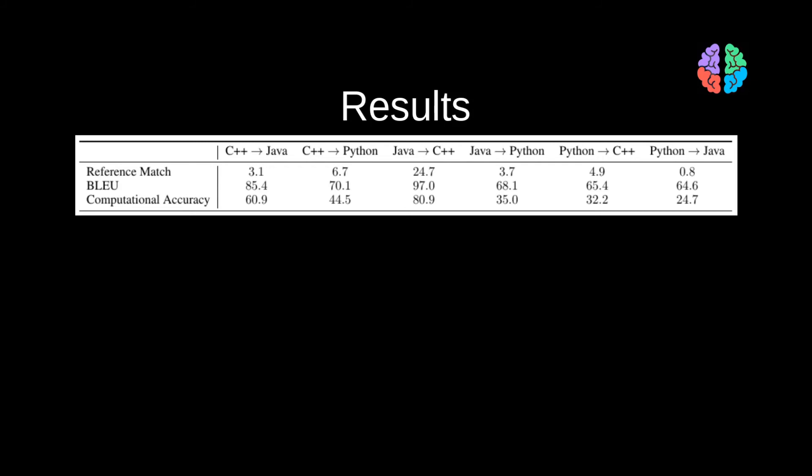With that note on evaluation metrics, let's take a look at the results. They of course report the results in BLEU score and computational accuracy that we just saw. Interestingly, the performance is far better when we translate from seemingly similar languages like C++ and Java. But the moment we translate from totally different languages like C++ to Python or Python to Java, both the computational accuracy and the BLEU score significantly reduce, indicating that there's a lot of room for improvement here.